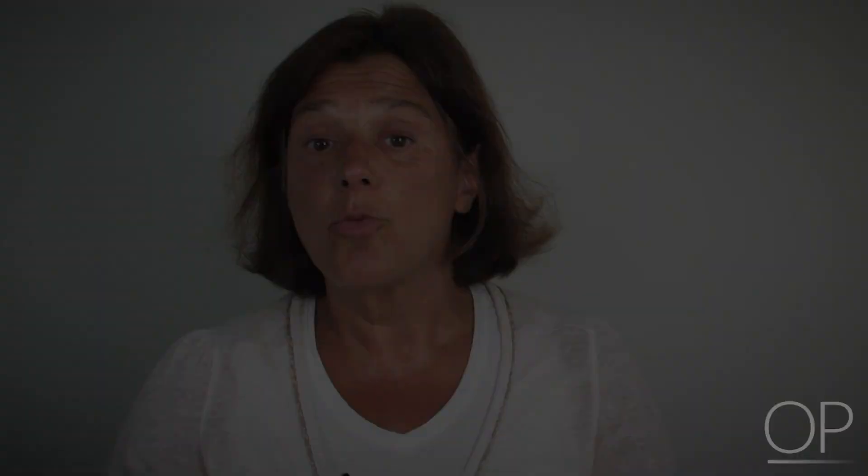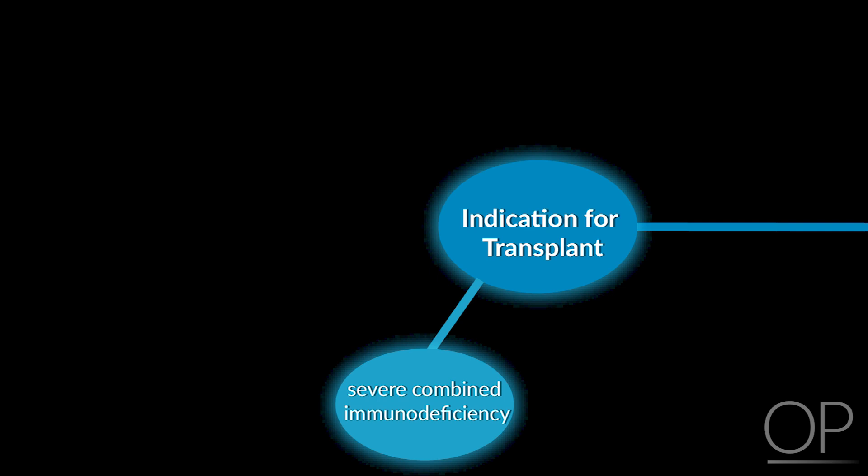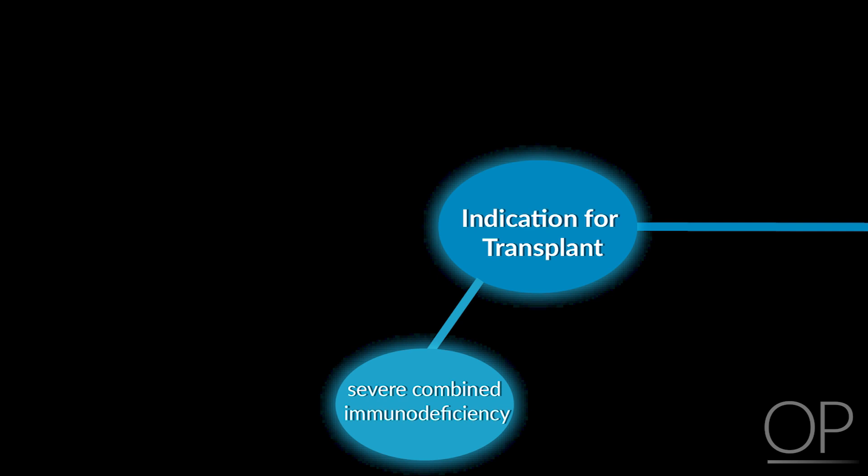Some assessment of the immune system can be predicted by pre-transplant factors. The saying in transplant is that things that happen pre-transplant really affect you post-transplant, which is why we try to keep people as safe and clean as possible leading up to transplant. One factor is the indication for transplant itself — transplanting a baby for severe combined immunodeficiency versus AML versus thalassemia versus aplastic anemia means each patient comes to day zero with a different amount of infectious burden.